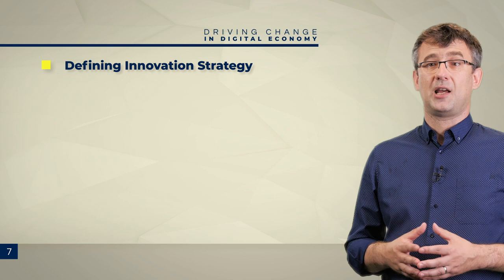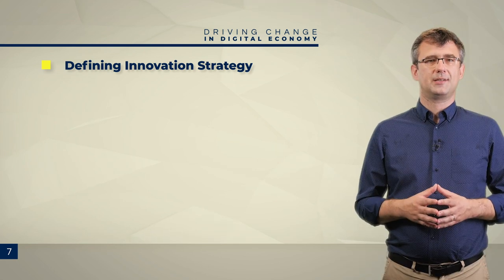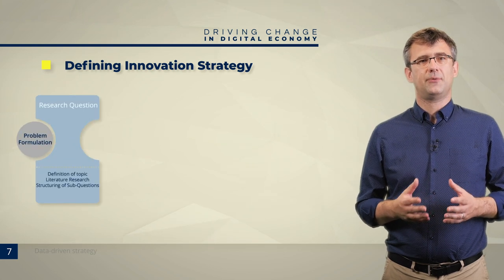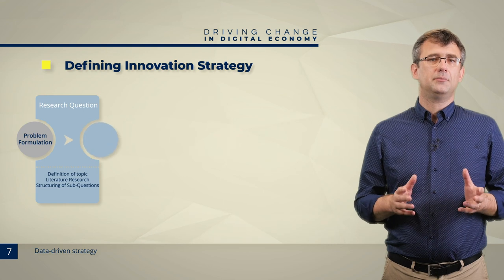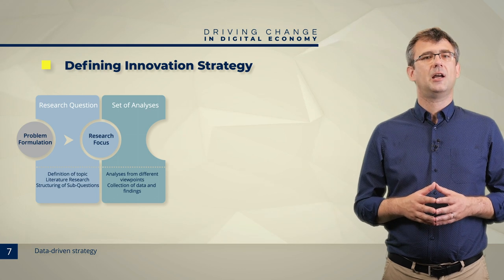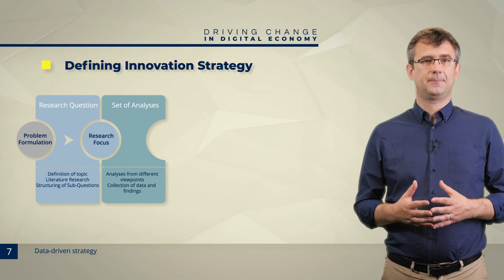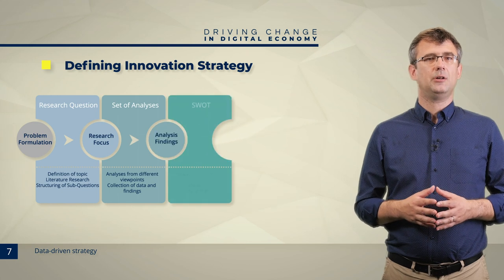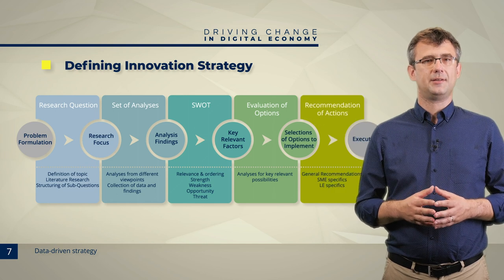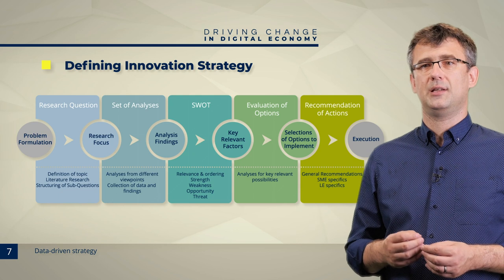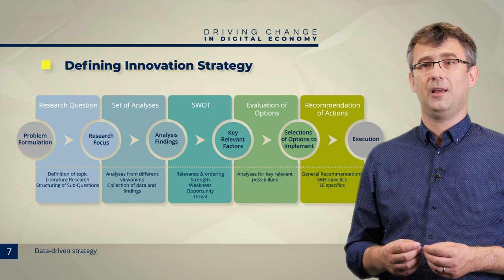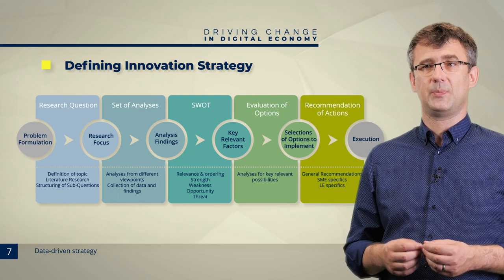Defining an innovation strategy is a time-consuming process, but it does not have to be as complex as it is often presented. You start by formulating your scope and defining the questions you wish to answer. Then you collect and analyze available data in as objective a way as possible — this is a time to keep your heart out of the game. You collect the outcomes, evaluate your options, and come up with a list of recommendations that form an innovation strategy. The key is knowing what and to whom to communicate the strategy, and every team must be informed about the direction they are expected to follow.